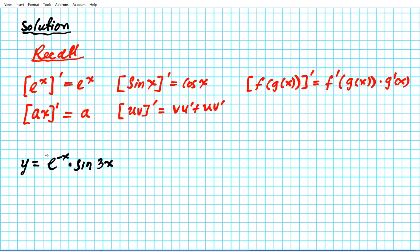Let's call the first function e to the negative x our u function, and sine 3x our v function. Applying the product rule, u times v prime is simply v·u prime plus u·v prime. We're going to differentiate both of them independently, then reinsert the respective derivatives and function values into this formula to determine the final result.